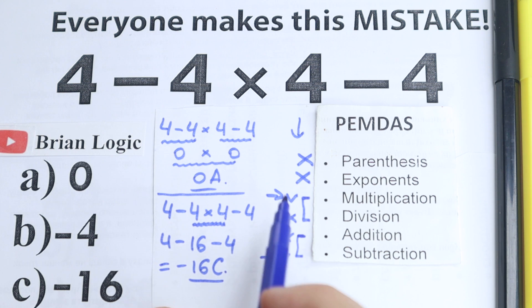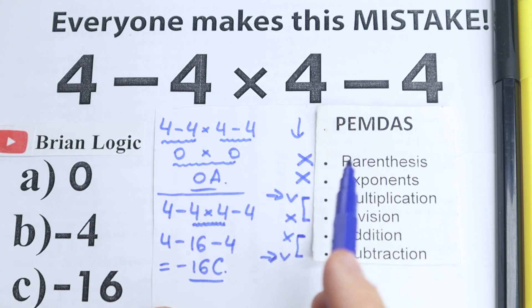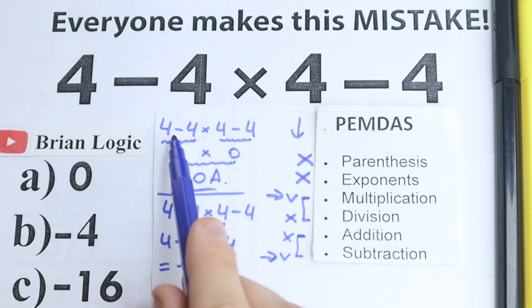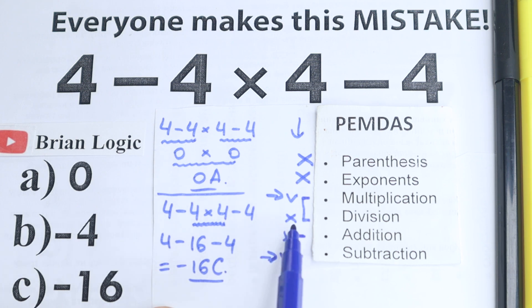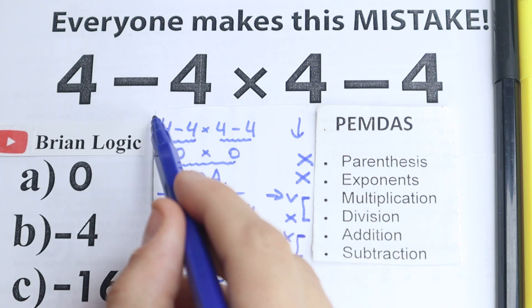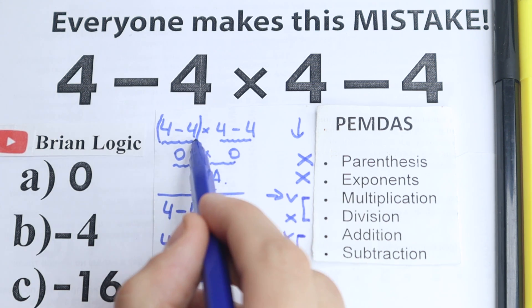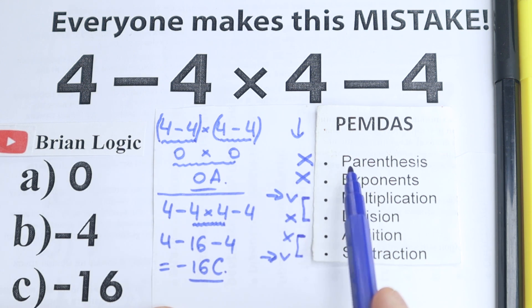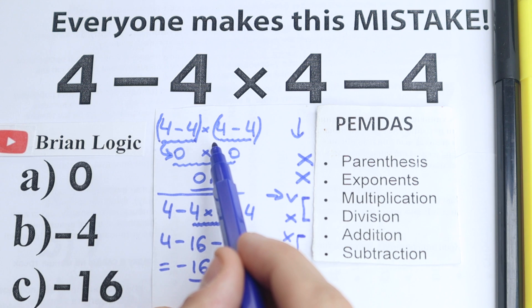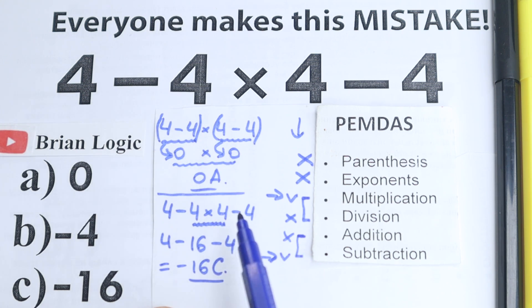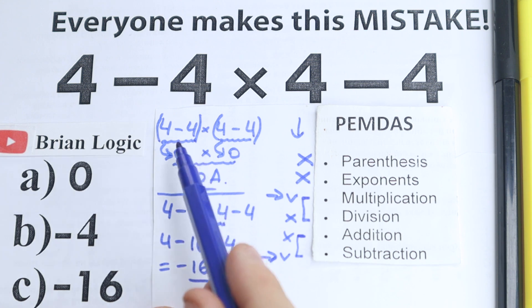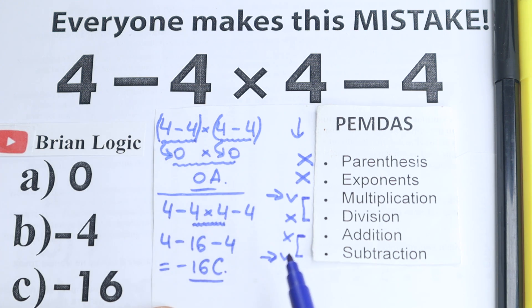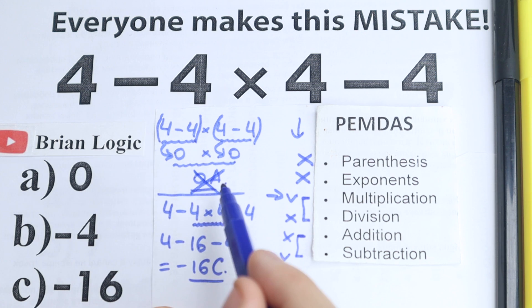Here's why 0 is absolutely incorrect — we cannot do subtraction before multiplication. As I said, multiplication always comes before addition and subtraction. However, if you put parentheses in the expression — (4 minus 4) times (4 minus 4) — then our first step would be the parentheses, and 0 times 0 would indeed equal 0. But we don't have parentheses here, so 0 is the wrong solution.